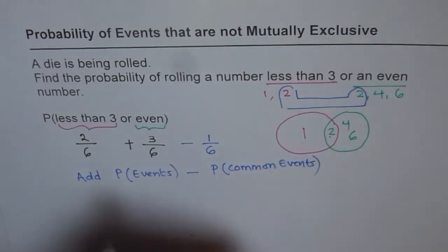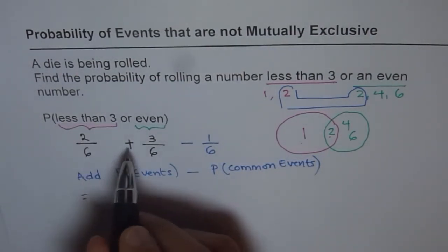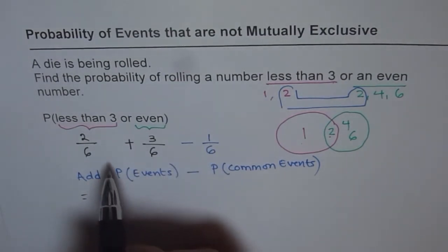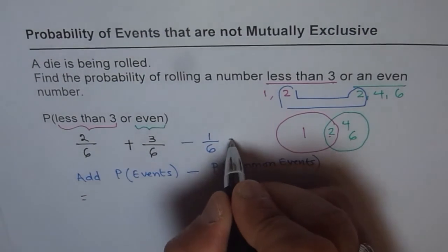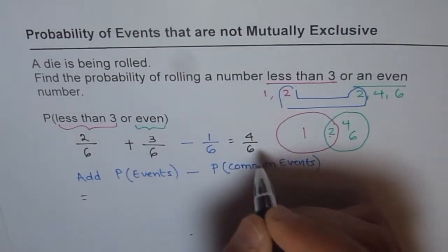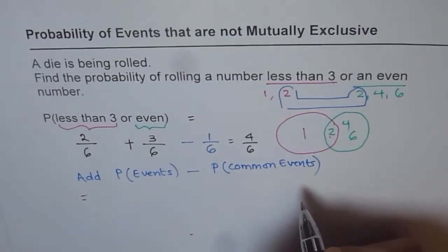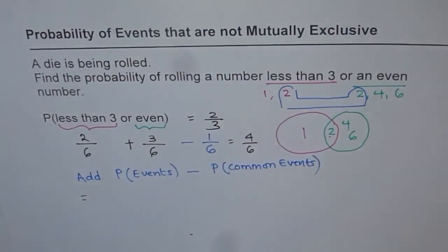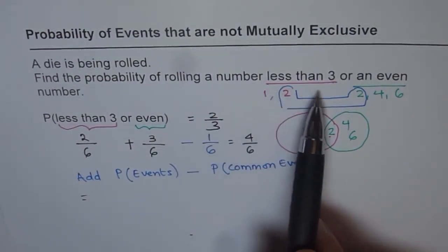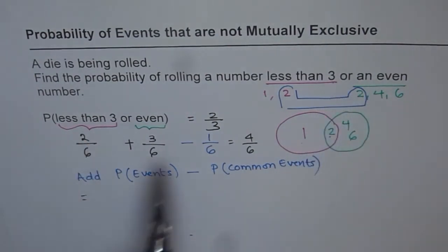So now this can be written as 2 over 6 plus 3 over 6 minus 1 over 6. 2 plus 3 is 5. 5 minus 1 is 4. So we get 4 out of 6, which could be simplified and written as 2 over 3. So the probability of rolling a number less than 3 or an even number is 2 over 3. I hope you understand how we got this answer.